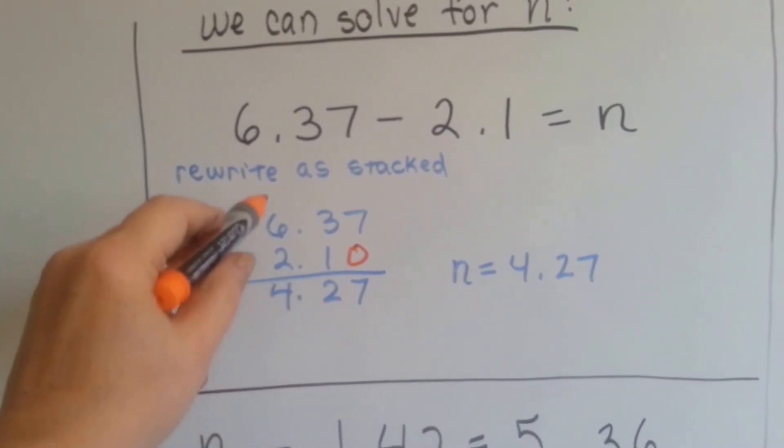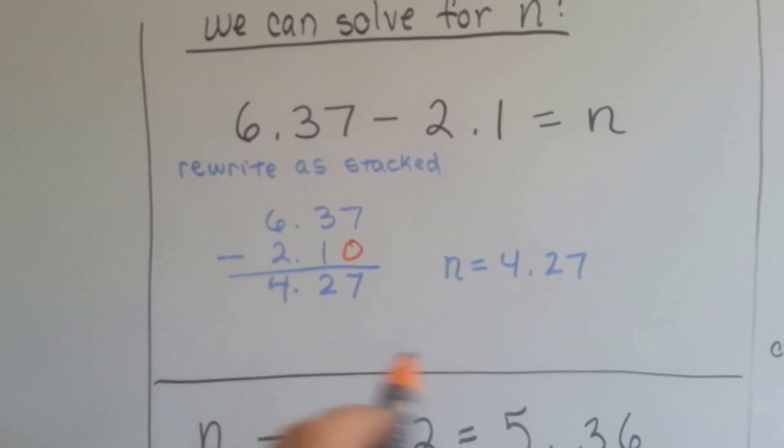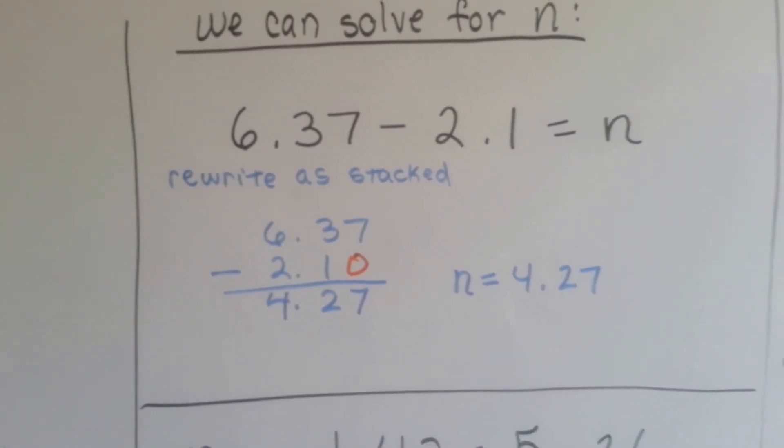3 take away 1 is 2. 6 take away 2 is 4. We have our decimals all lined up pretty and perfect. And our answer is 4 and 27 hundredths. n equals 4 and 27 hundredths.